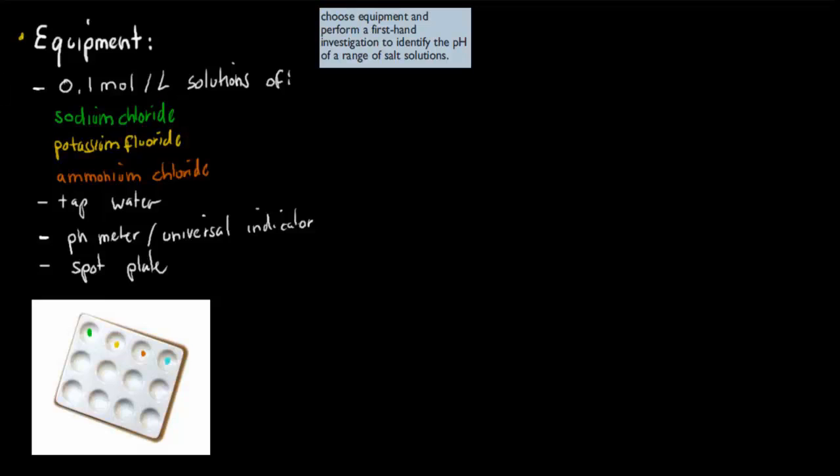And then what you've done is you've used either your pH meter or your indicator to check the actual pH of those. So after you've put them on your spot plate, you check the pH. It's again a very straightforward experiment, but the idea behind this experiment is just for you to see that there's different pHs for different types of salts. They're not all neutral.